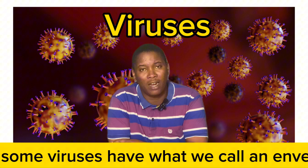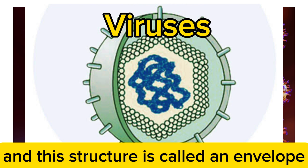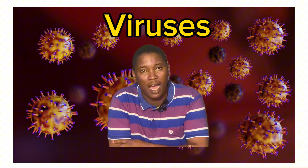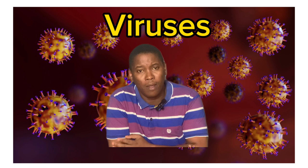Some viruses have what we call an envelope — they have another outer layer, a structure that contains lipids, carbohydrates, and some proteins, and this structure is called an envelope. Viruses that have this kind of structure we refer to as enveloped viruses, and viruses that do not have that kind of structure we say they are non-enveloped or naked viruses.